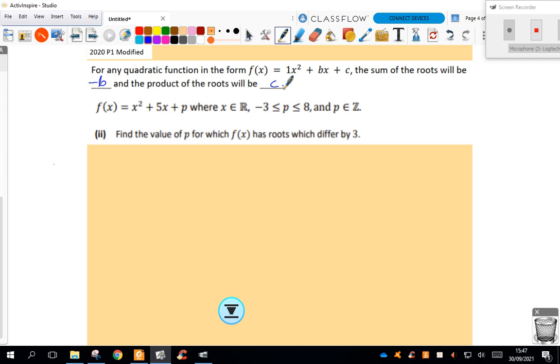Again we've got the same function f(x) equals x squared plus 5x plus p, where p is between negative 3 and 8. It says find the value of p for which f(x) has roots which differ by 3.